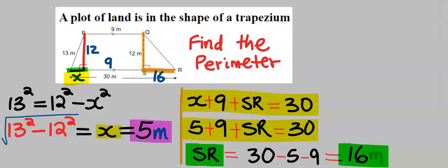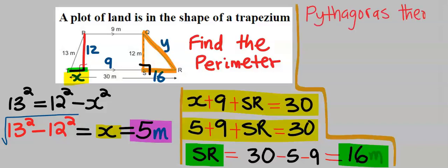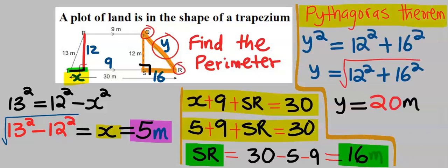Next, we have here to be 12 meters and here to be 16 meters. We are going to find this side using Pythagoras' theorem. Let's call this unknown side y, which is length QR. Using Pythagoras' theorem, y is equal to 20 meters.